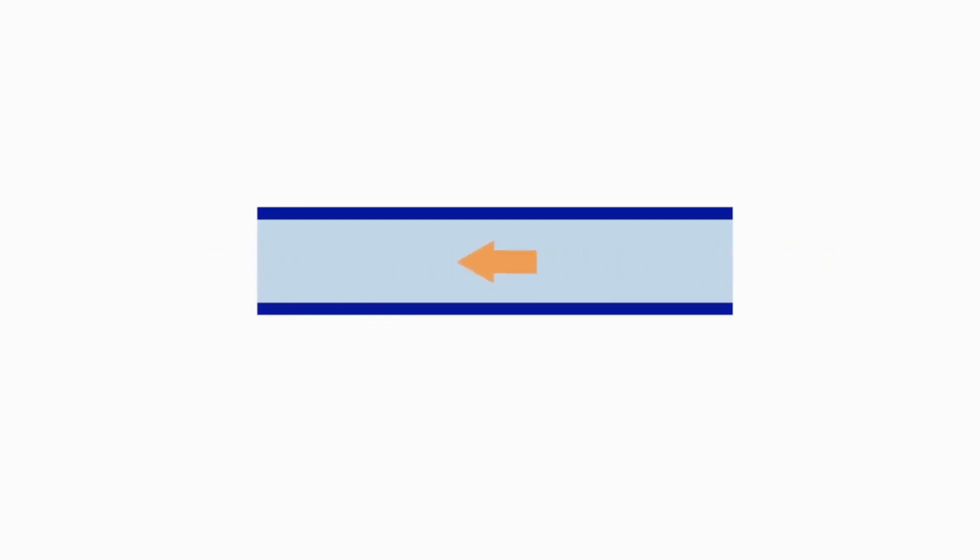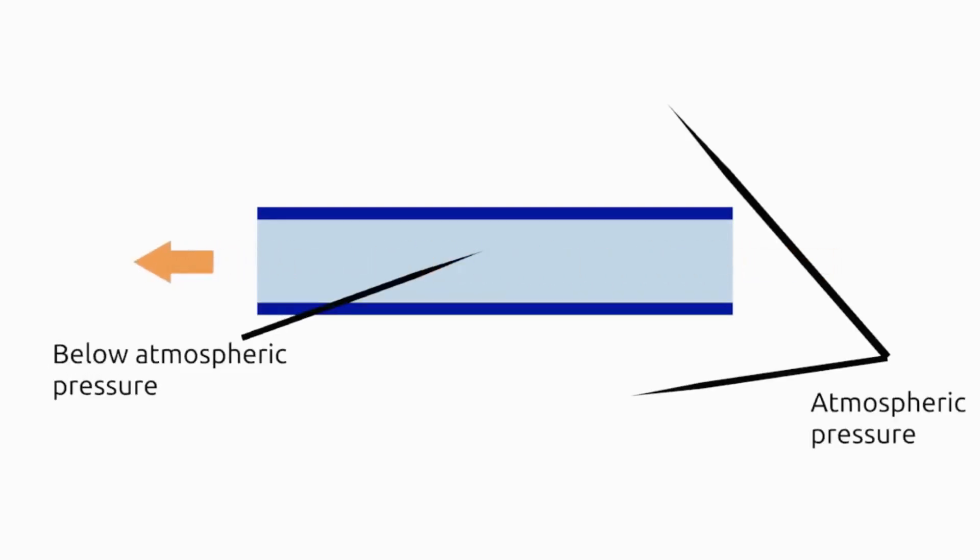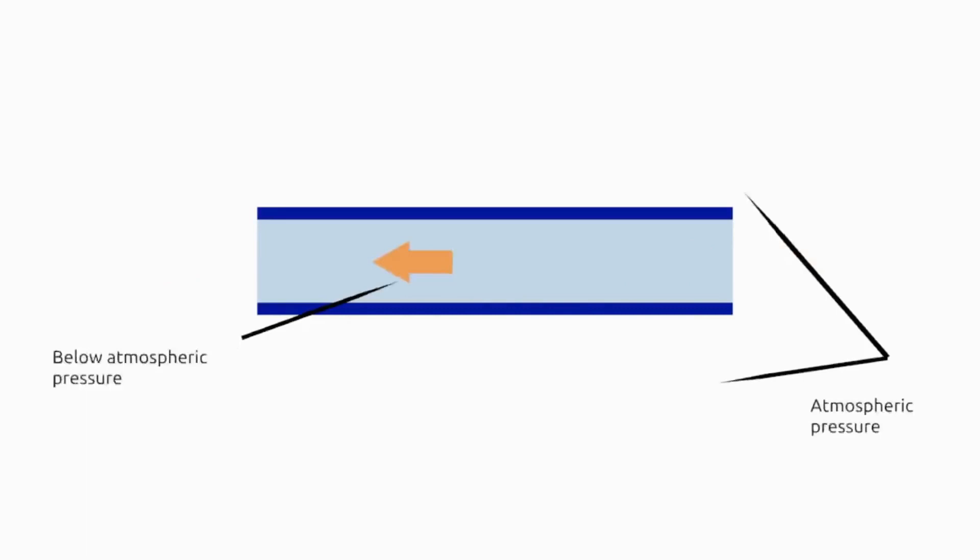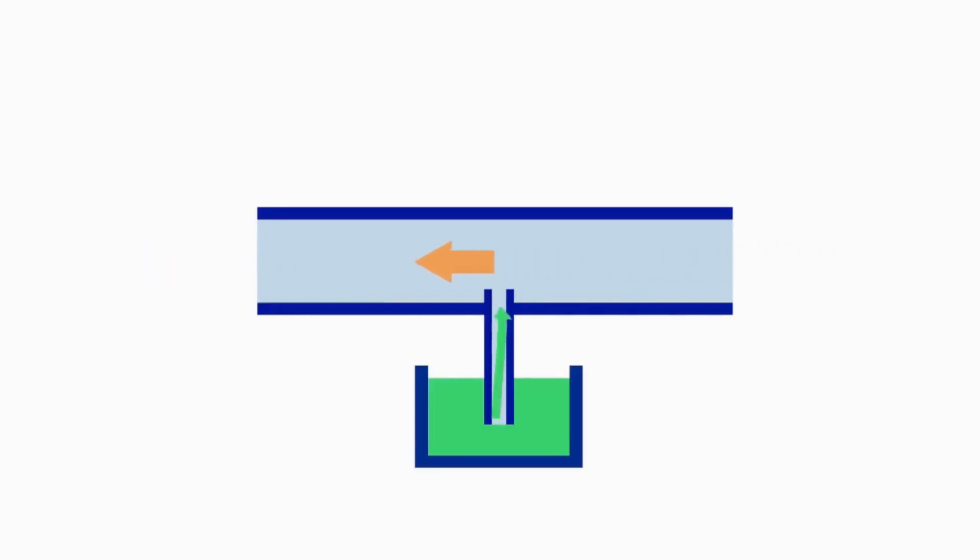This is called the Bernoulli principle. This principle states that the faster the air flow, the lower the air pressure. Due to this pressure drop, fuel is able to be sucked into the air stream.